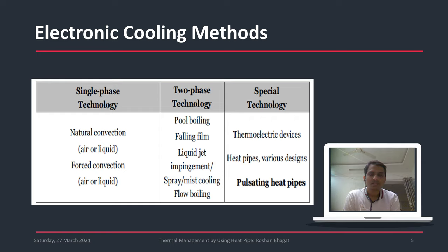Electronic cooling methods: in earlier days, electronic cooling was done by natural convection or forced convection. In natural convection, cooling of electronic devices takes place because of the natural flow of fluid. In forced convection, external fans are used — just like in laptops, where fans are installed for cooling purposes. These are single-phase technologies that were used in earlier days.